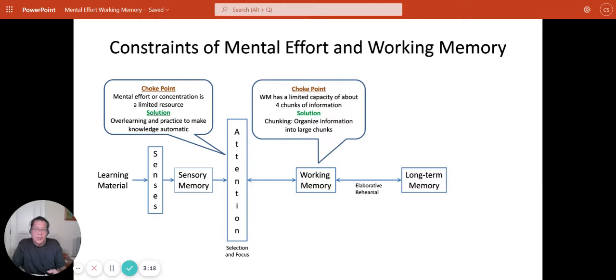We have two different kinds of constraints here. One is a process constraint, which is concentration or mental effort. The other is a capacity constraint, which is the amount of information that you can hold in working memory. Both of them can affect our ability to get information into long-term memory, which is our permanent storehouse of memory, which is the goal of teaching and learning.